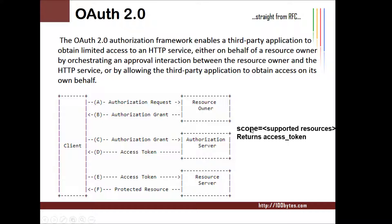Scope is one of the parameters passed in communication between the client and the authorization server. The scope represents protected resources such as email, profile, photos at google.com, Google Drive, Facebook comments, or Twitter tweets. As a result of the OAuth 2.0 flow, you get an access token — a JWT token containing information about the audience, issuer, expiry time, issued date, and scope. This access token is presented to the resource server, which validates it and allows the client to access the protected resource.